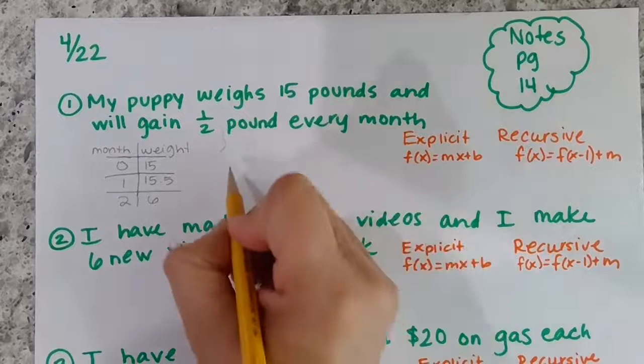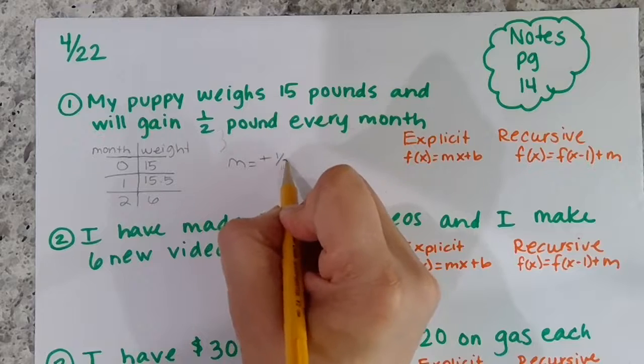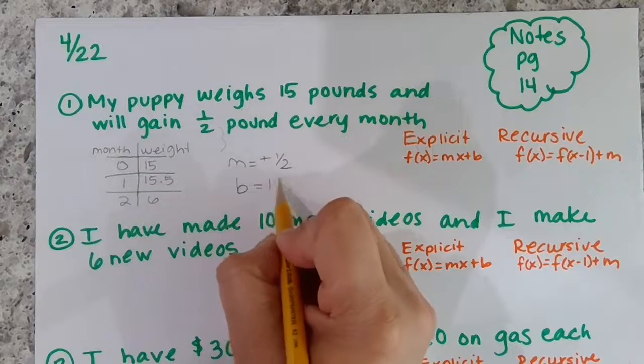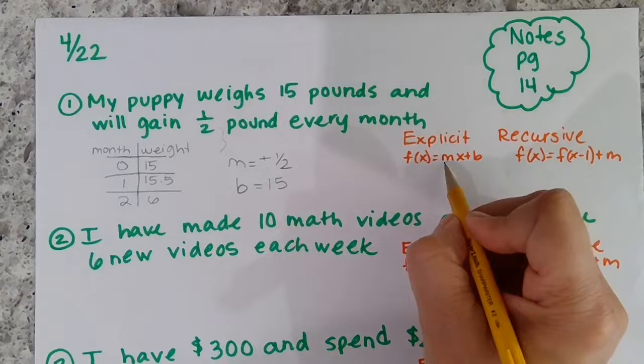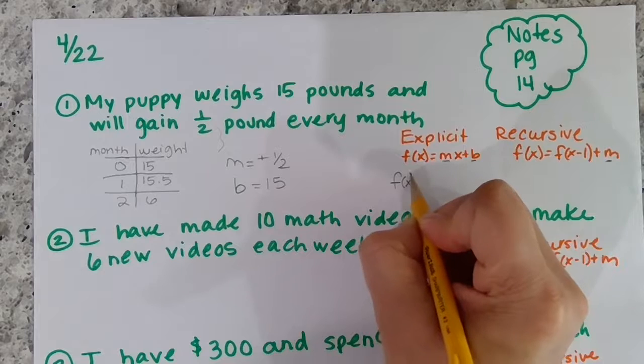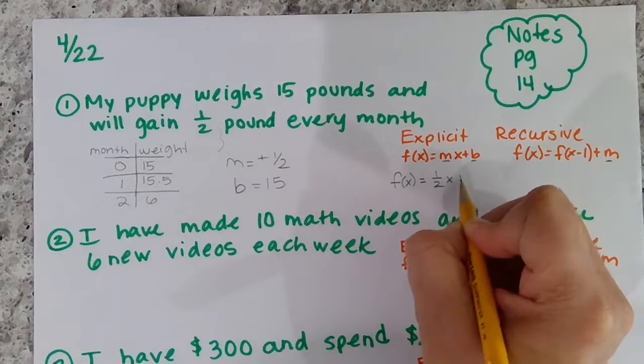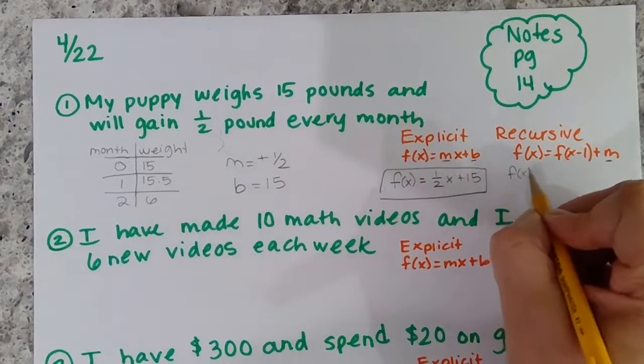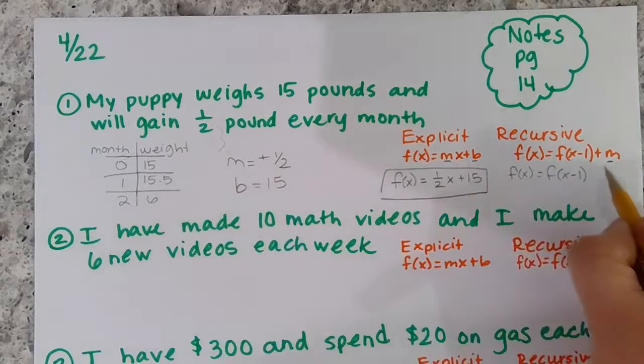Your slope is what's changing, which is positive one-half. Your y-intercept is the starting amount, so he started with 15. Put it all together. You're only plugging in your m, your b; everything else stays exactly the same. So the explicit is f(x) equals one-half x plus 15. Recursive: f(x) equals f(x minus one) plus one-half.